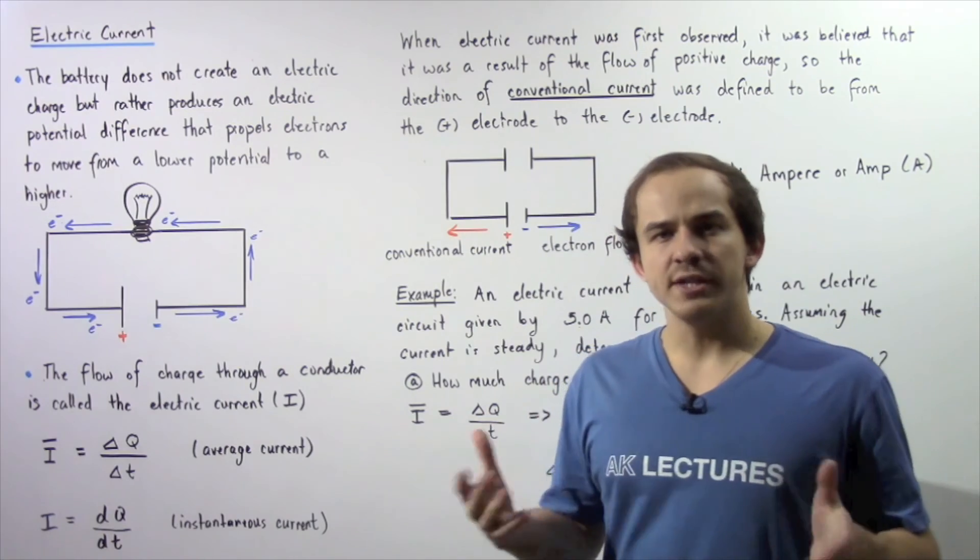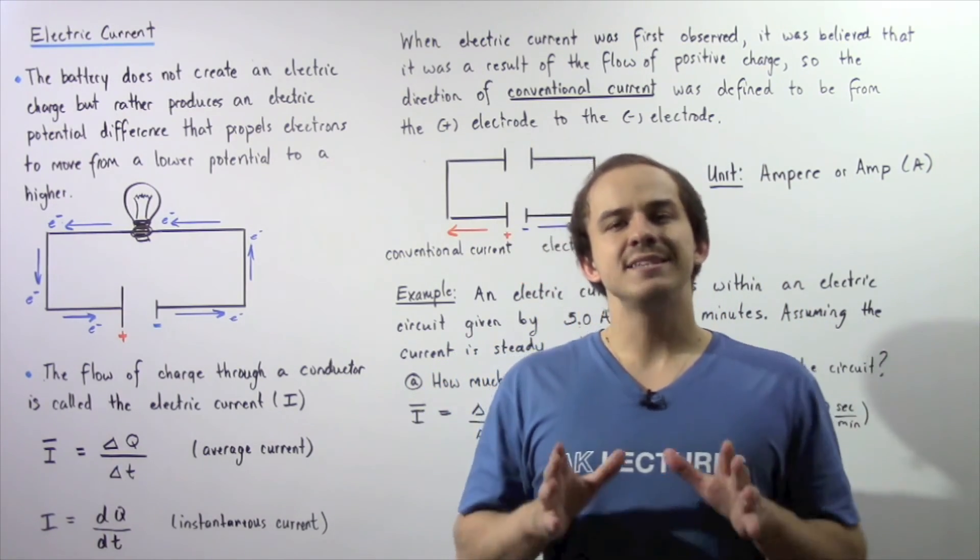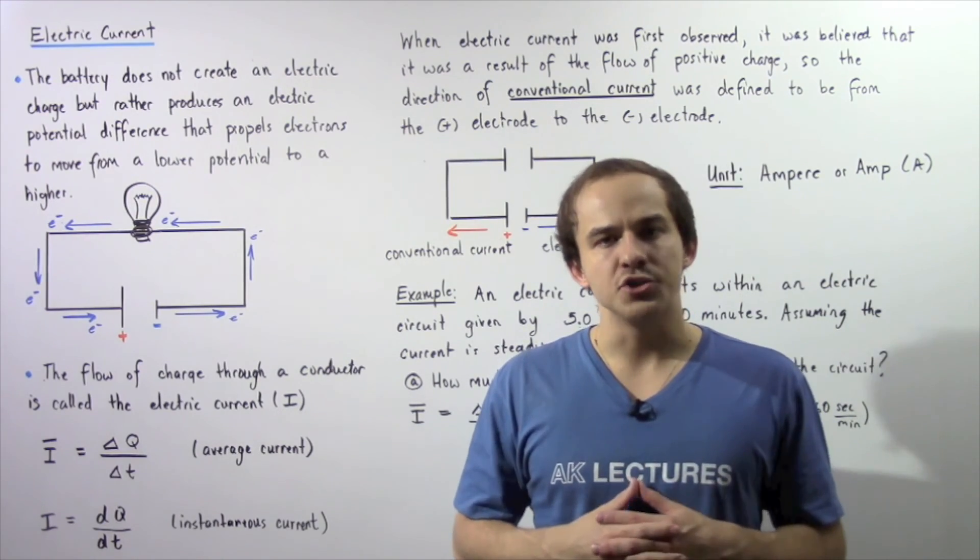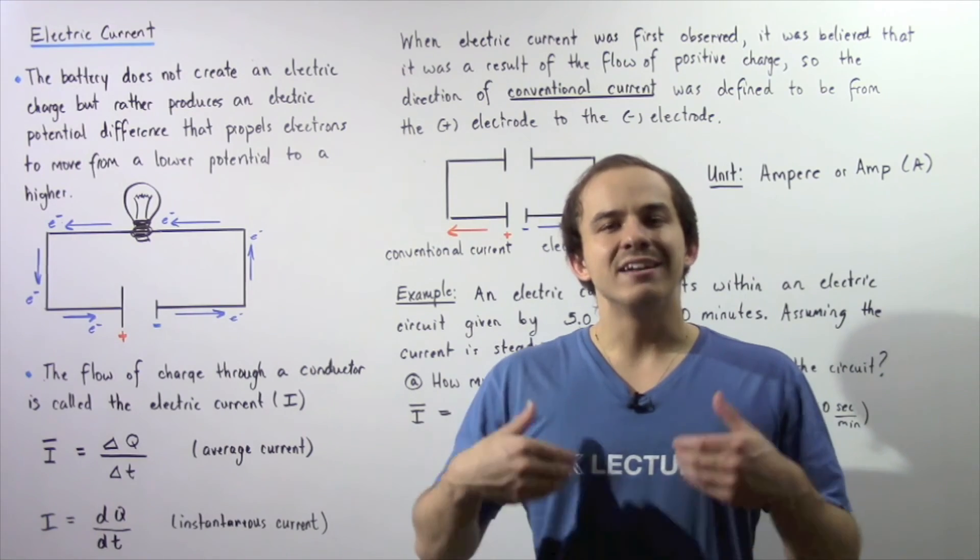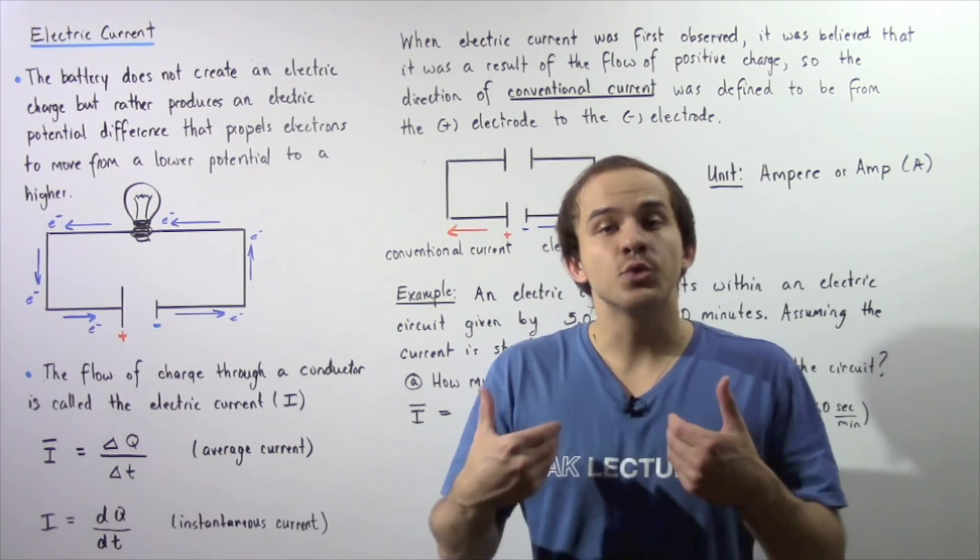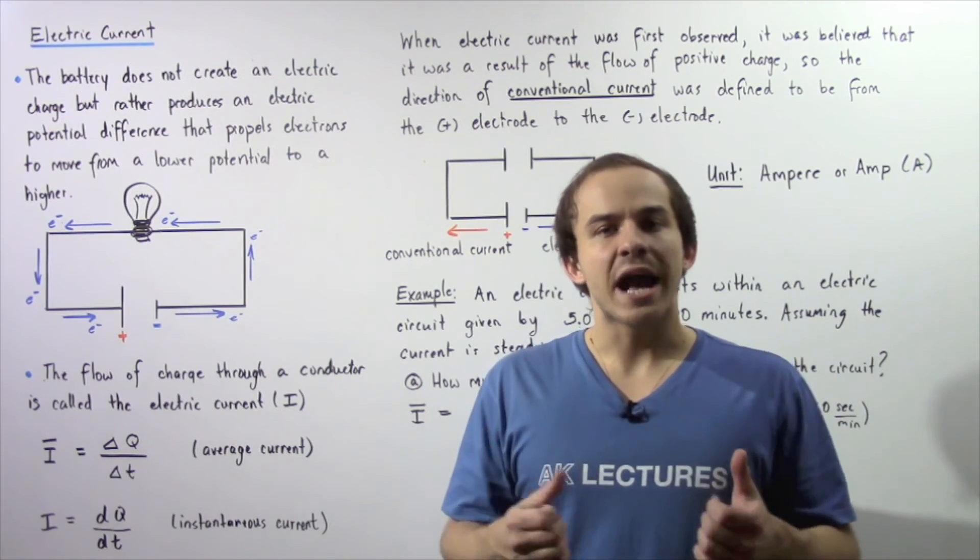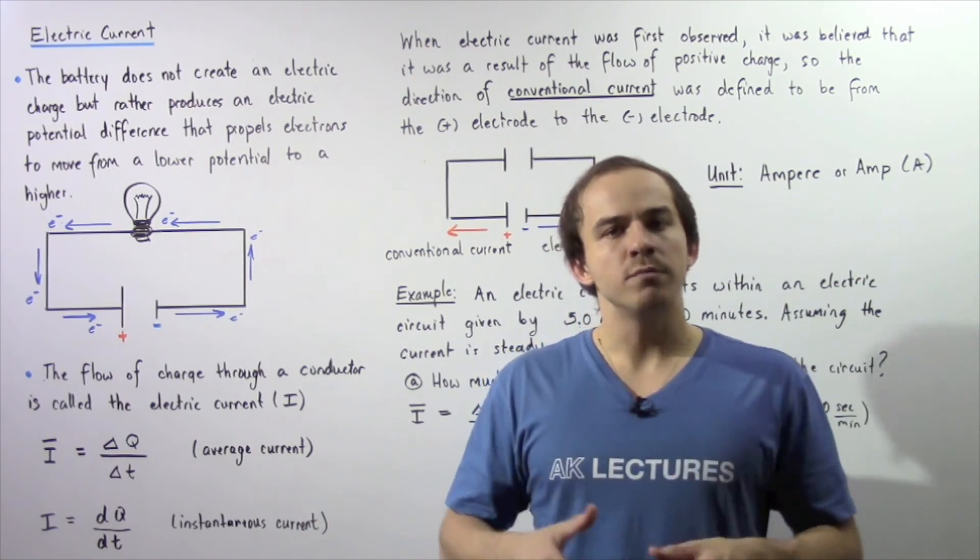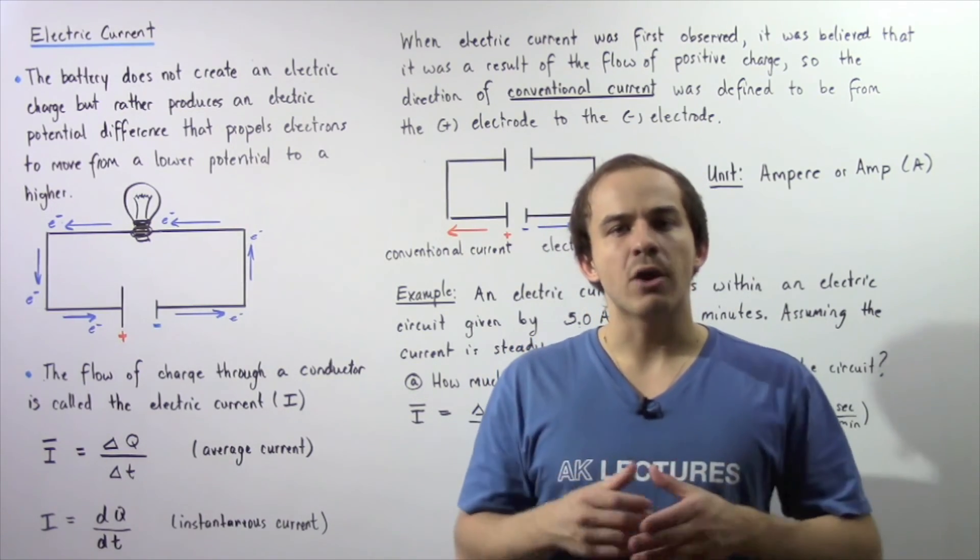So what actually takes place inside a battery is a chemical reaction produces a separation of electric charge, and because of that separation of electric charge, an electric potential difference, a voltage difference is created. That voltage difference propels our electrons to move from the lower potential to the higher potential within our battery.